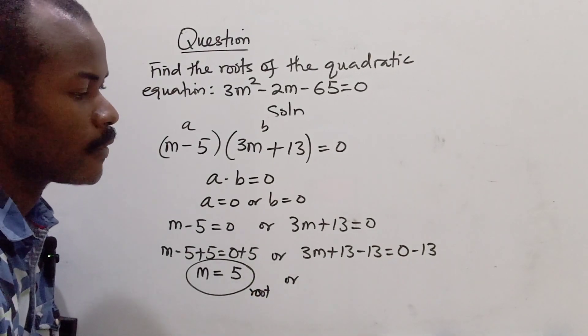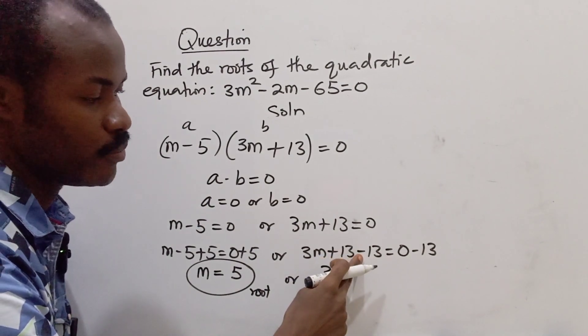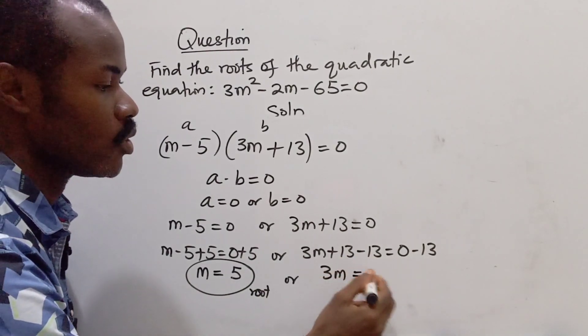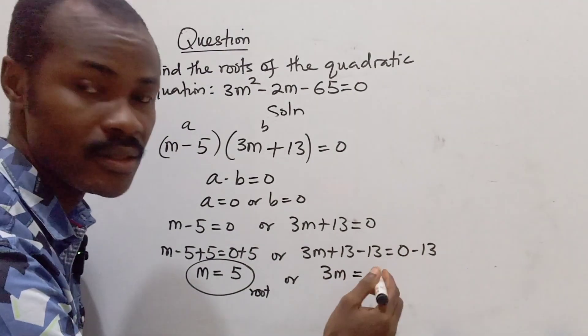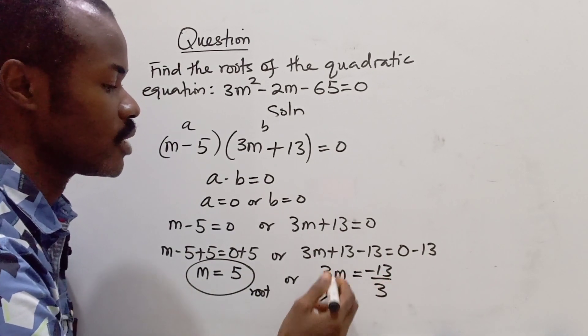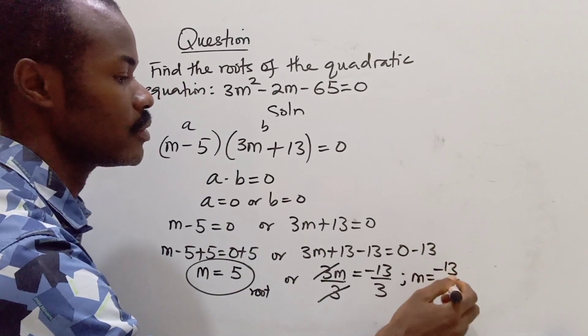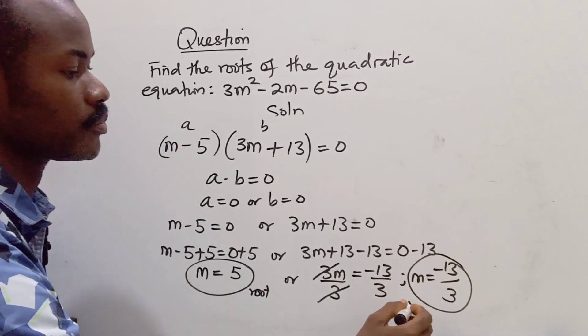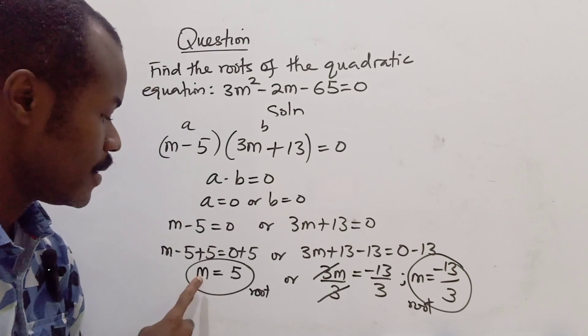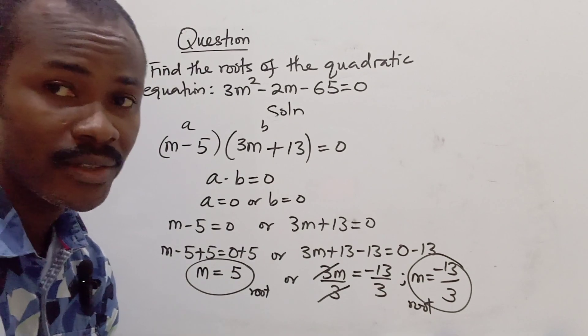Now the next root is 3m + 13 = 0. We subtract 13 from both sides. +13 - 13 is 0, so we have 3m = -13. Now we divide both sides by 3. So m = -13/3. This is the second root. So the roots of the quadratic equation are m = 5 and m = -13/3.